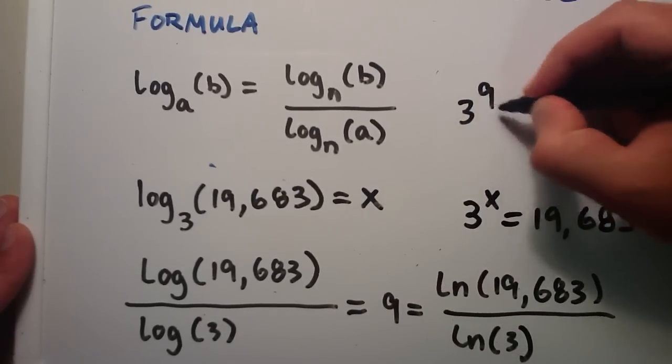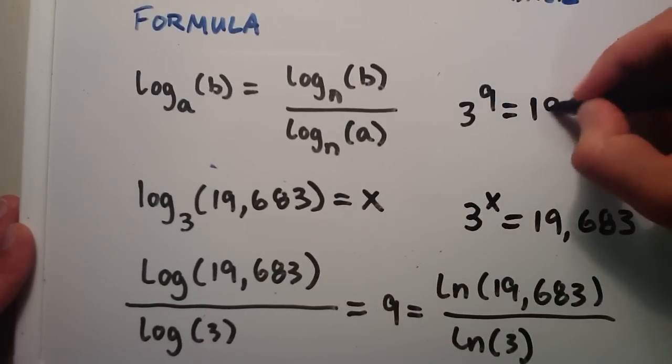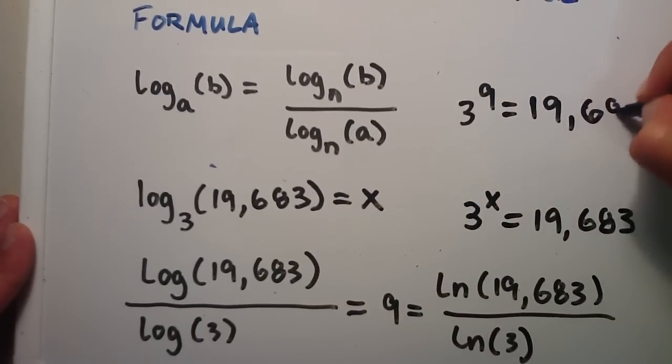So therefore, 3 to the 9th power, because our answer was 9, x equals 9, is equal to 19,683.